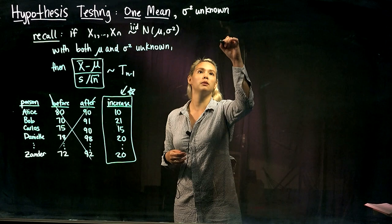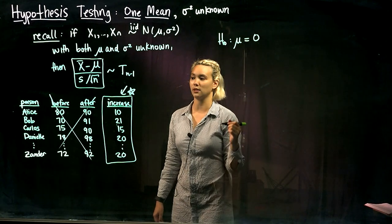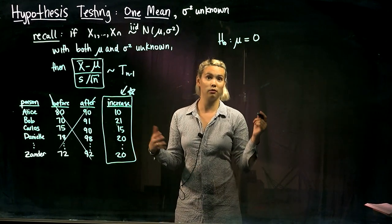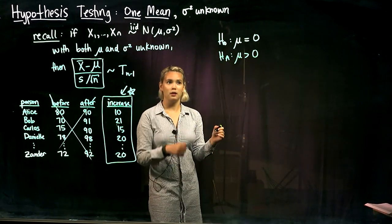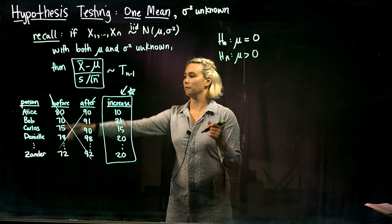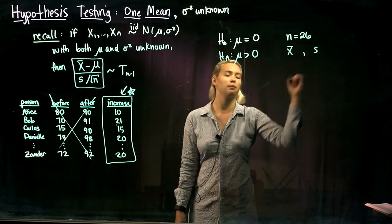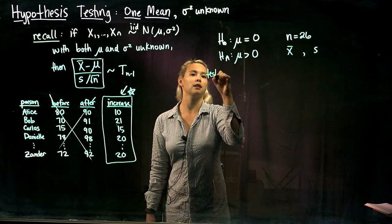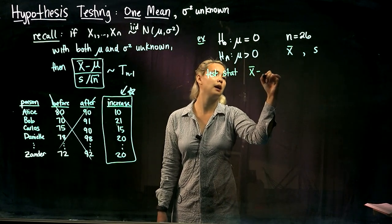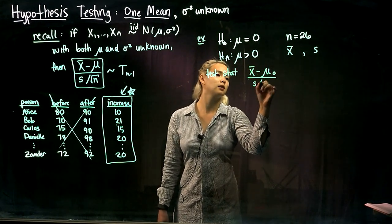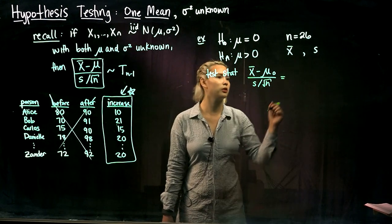So now we could go ahead and do a hypothesis test using just that variable there. So we could do something like, if we wanted to see whether there is an improvement, the null hypothesis would be there's no improvement, meaning μ is equal to zero, meaning the mean increase is zero. And then if there is improvement then μ is going to be greater than zero. So we could go ahead and do that hypothesis test. If we have n equals 26 people, then we could calculate x̄ and we could calculate the sample standard deviation.